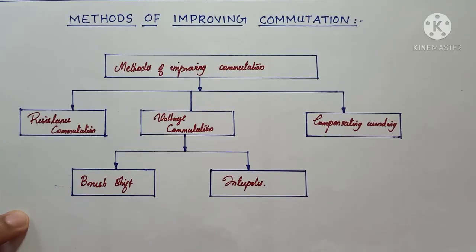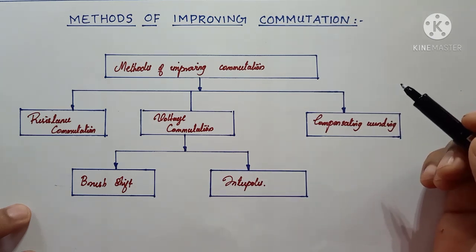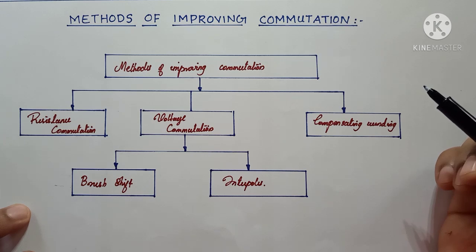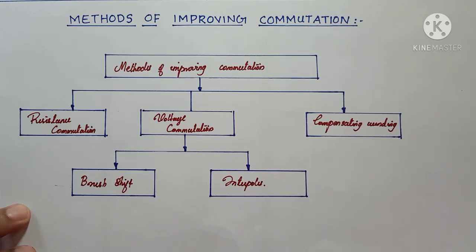In this lecture, we will discuss the major methods that we can adopt to improve commutation in DC generators. We discussed commutation in the previous video. Commutation is the reversal of current in the commutator during the short-circuit period. If the reversal of current is not completed during the short-circuit period, then the commutation is not good or not linear — that is called delayed commutation.